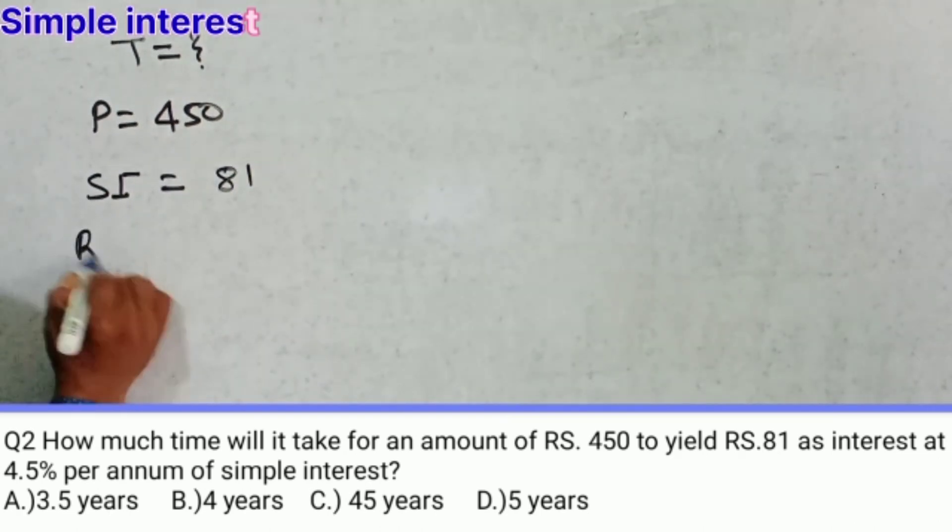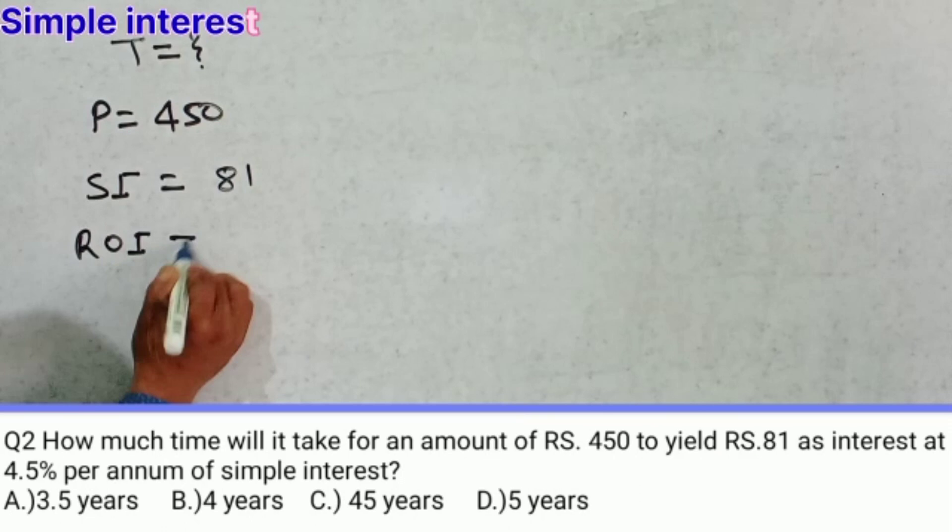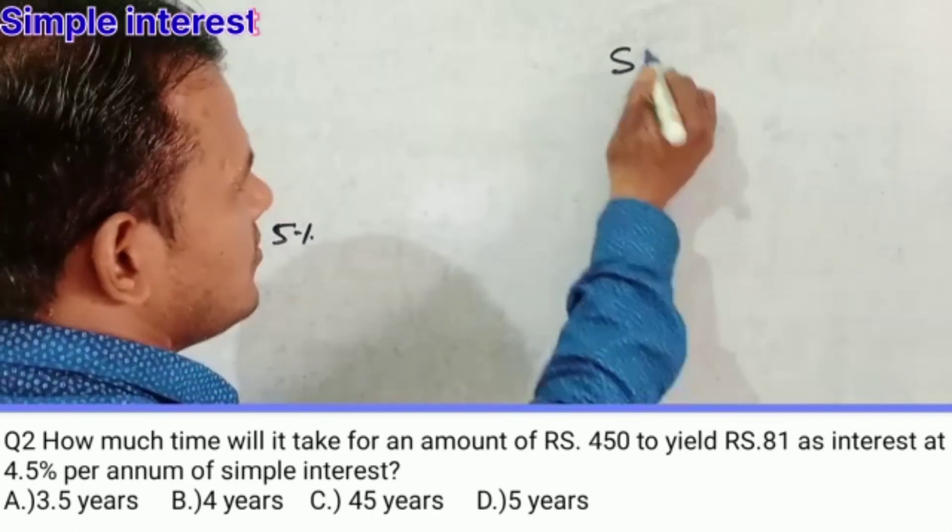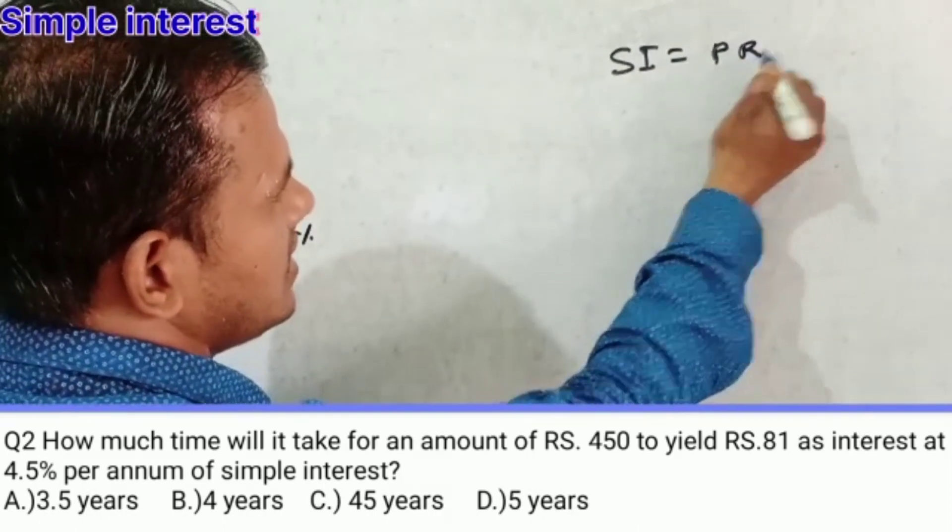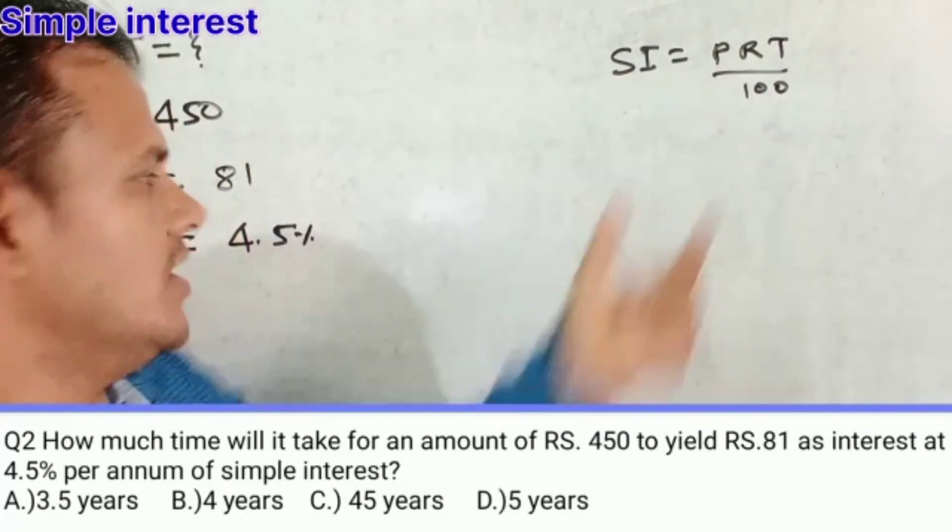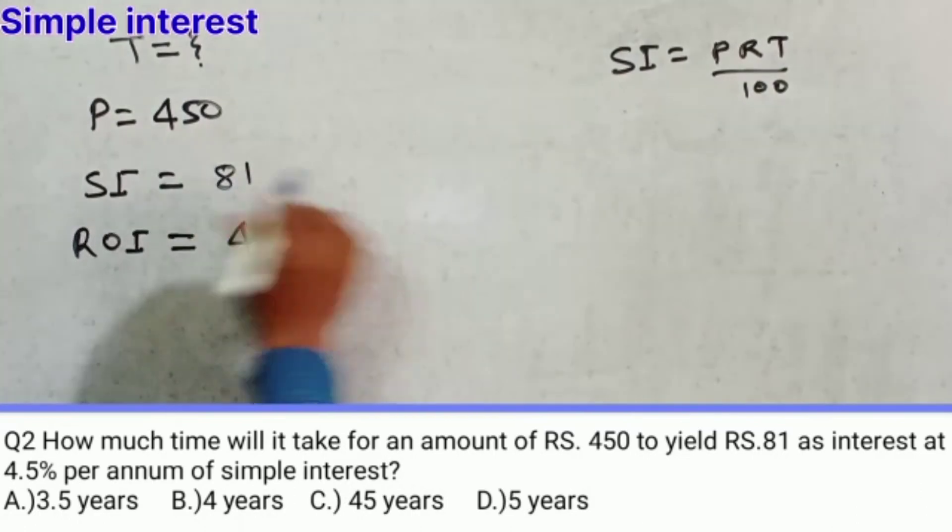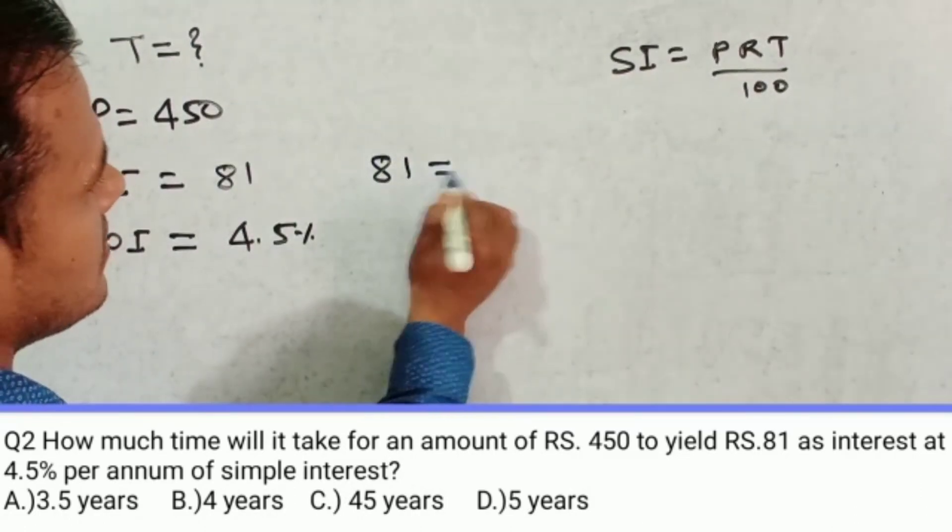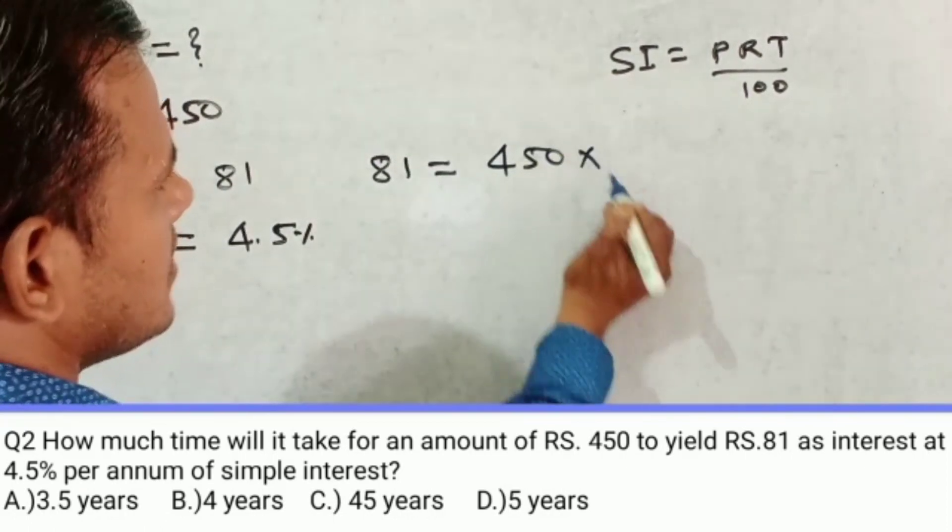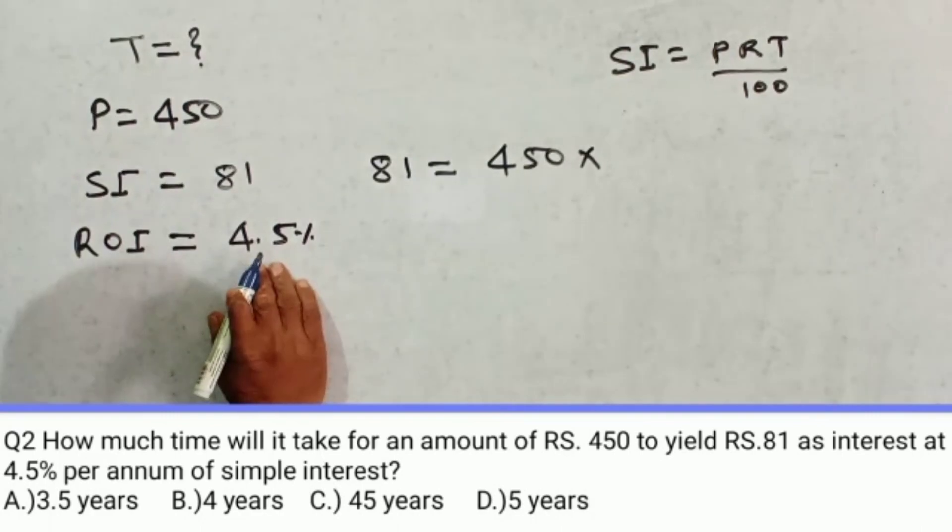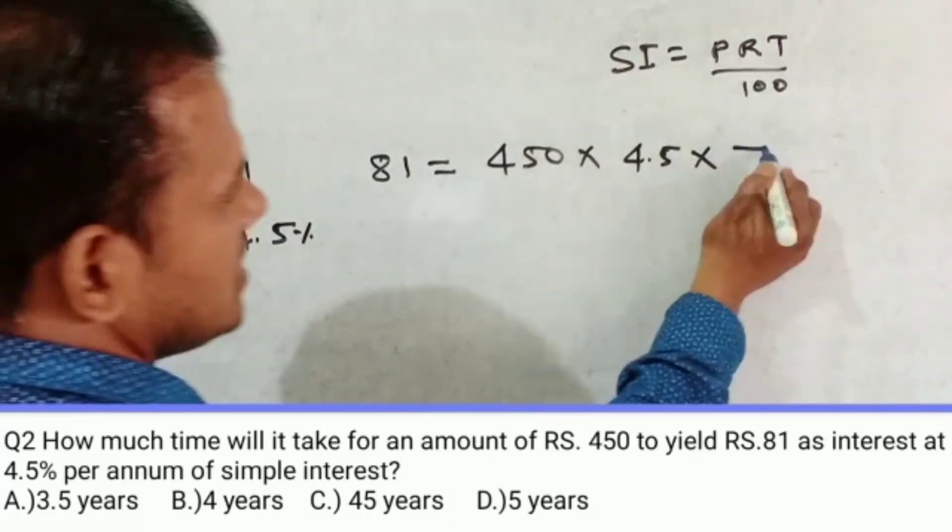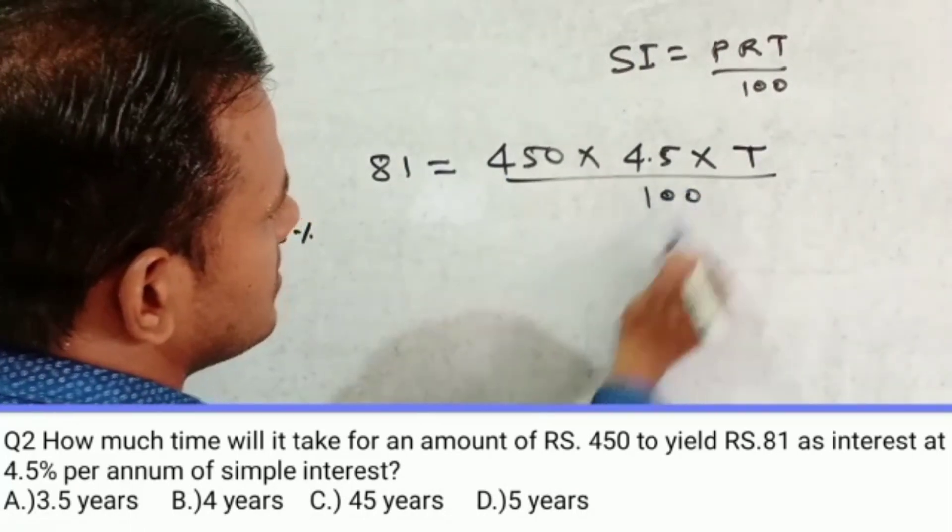And rate of interest is equal to 4.5%. Simple interest formula is PRT by 100. This is the simple interest formula. So simple interest 81 is equal to principle 450, and rate of interest is 4.5%, and time is not given. So write here only T by 100.